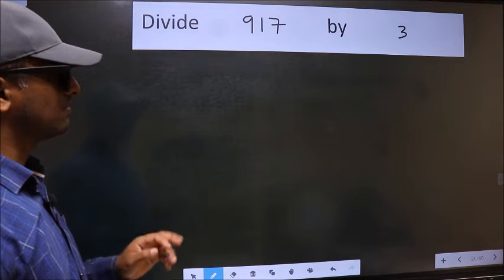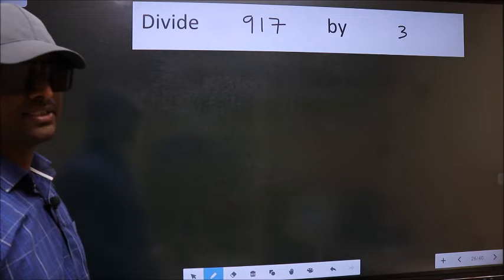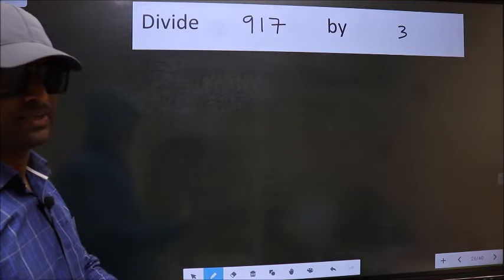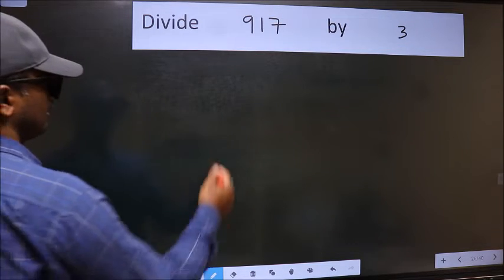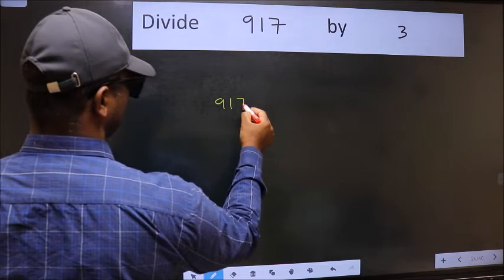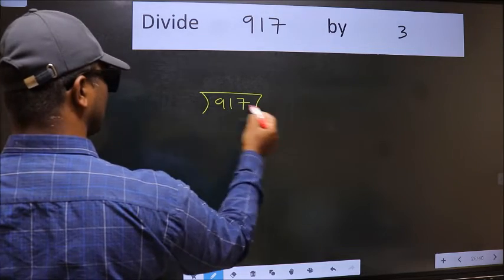Divide 917 by 3. To do this division, we should frame it in this way. 917 and 3 here.